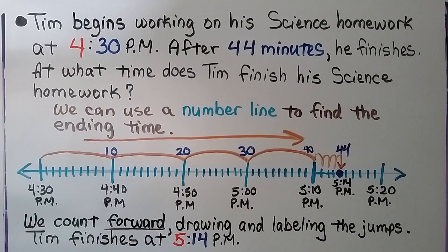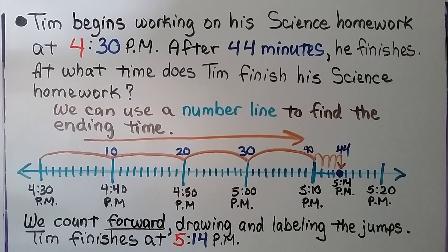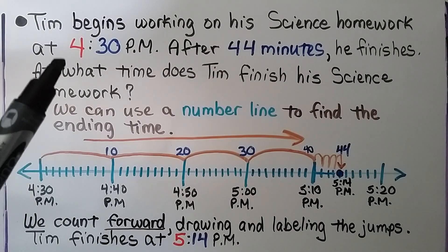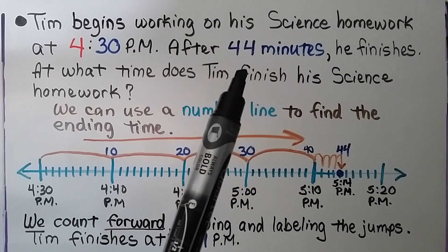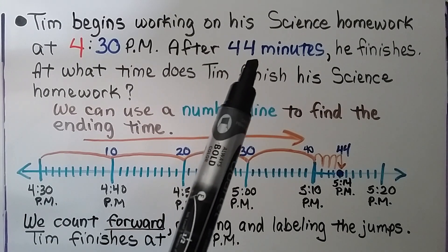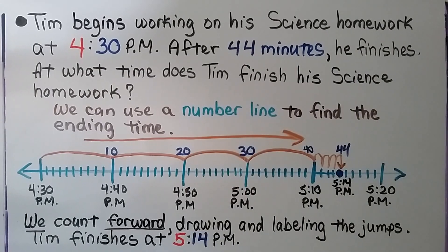Tim begins working on his science homework at 4:30 p.m. After 44 minutes, he finishes. At what time does Tim finish his science homework? We can use a number line to find the ending time. It gave us the beginning time of 4:30 p.m. and told us the elapsed time of 44 minutes until he finished.